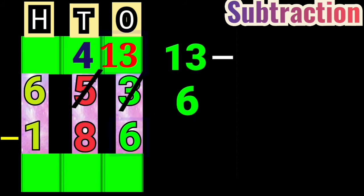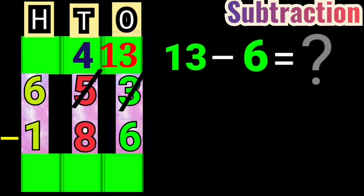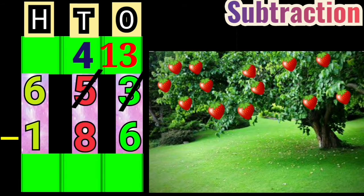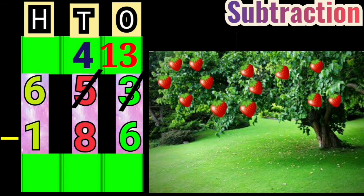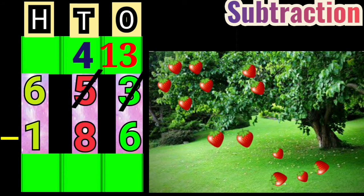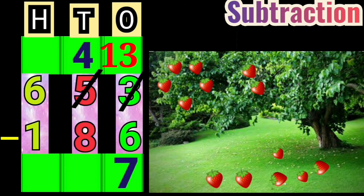13 minus 6 is how much? We will subtract this with an example. There are 13 strawberries on a tree. After some time, due to strong wind, 6 strawberries fallen down on the ground. Now, how many strawberries are left on the tree? Yes, very good, there are 7 strawberries left on the tree. So, write down 7 in the ones column.